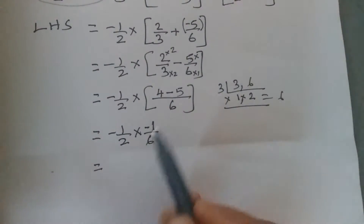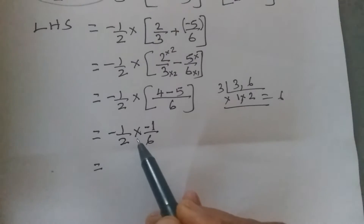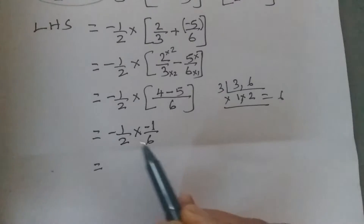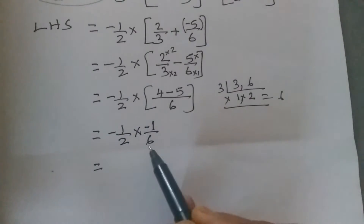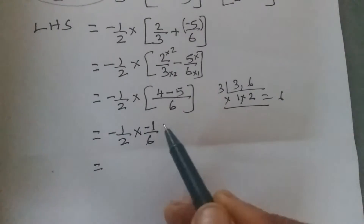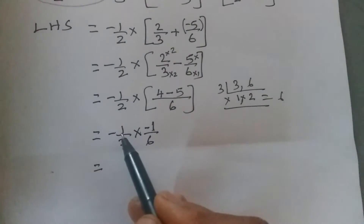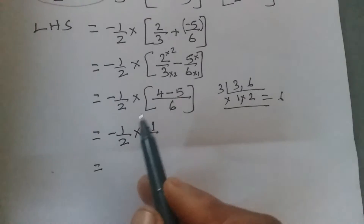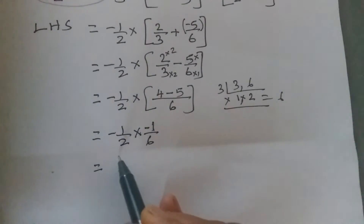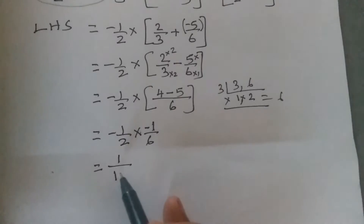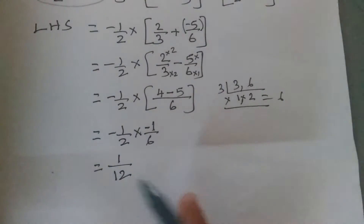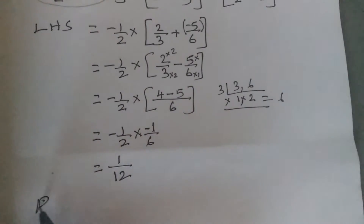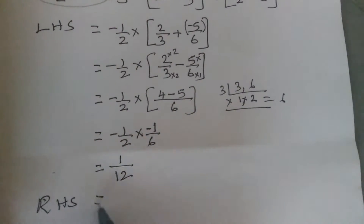Now we have −1/2 × (−1/6). For multiplication, LCM is not needed. We check for common factors — numerators are both 1, so no cancellation. Multiply numerators: 1 × 1 = 1. Multiply denominators: 2 × 6 = 12. Minus × minus = plus, so the LHS = 1/12.